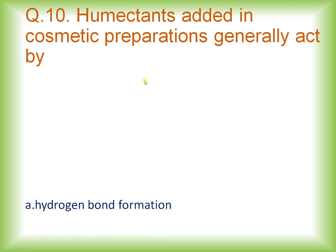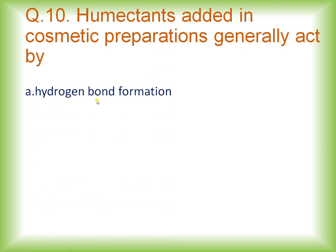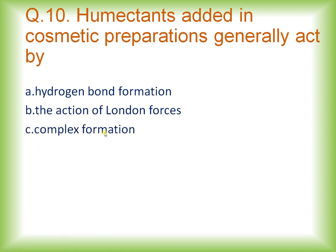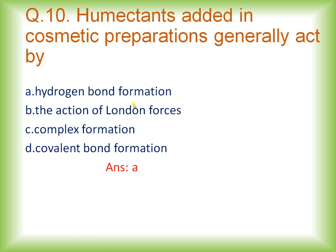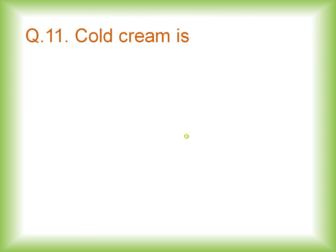Question number ten: humectants added in cosmetic preparation generally act by which mechanism? Options are hydrogen bond formation, action of London forces, complex formation, or covalent bond formation. The right answer is option A: humectants used in cosmetic preparation generally act by formation of a hydrogen bond.